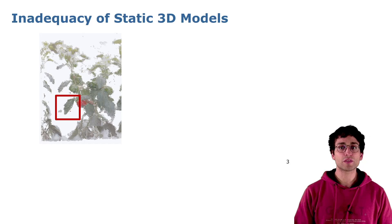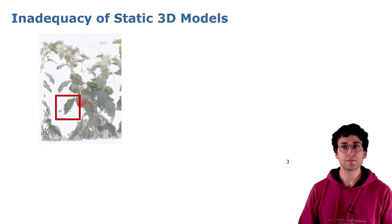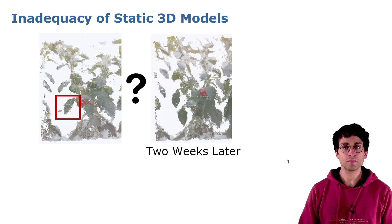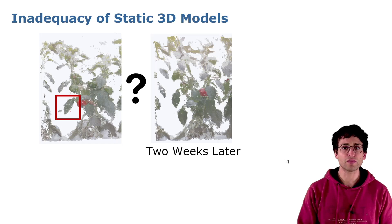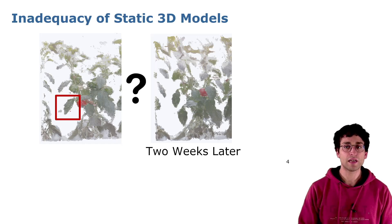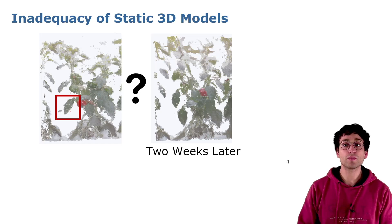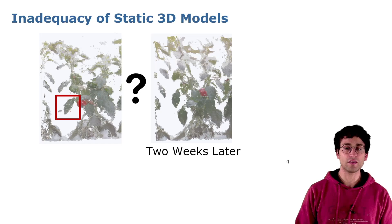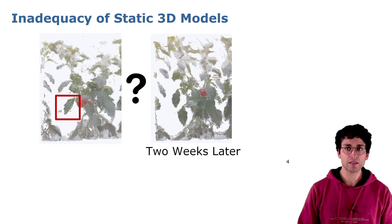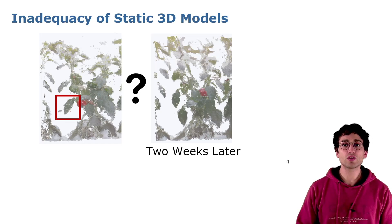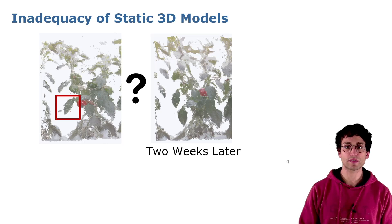Imagine that we want to perform some measurements on this leaf. If we now take the model of the same plant but computed some weeks later and we want to perform the same measurements to check the leaf evolution, with a new static 3D model it would be hard to even understand where the leaf is now. We need to solve some matching problem and this can be hard especially with noisy models.